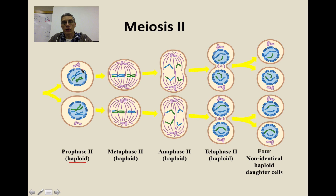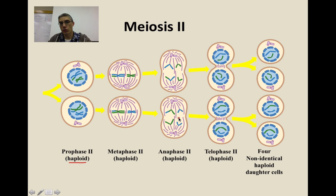During prophase II, the same thing occurs: we have a breakdown of the nuclear membrane, centrioles appear, and the chromosomes are now visible. When you look at metaphase II, these chromosomes line up in the middle, but instead of homologous chromosomes lining up, now we actually have just single chromosomes lining up in the middle. During anaphase II, we're going to have a separation of those sister chromatids — those pull apart during anaphase II. Then during telophase II, we get the development of the cell plate or cleavage furrow between the two cells. Eventually cytokinesis occurs, and we have four complete cells at the very end, which are considered haploid daughter cells.